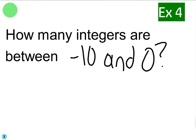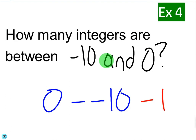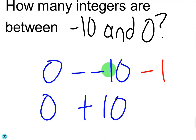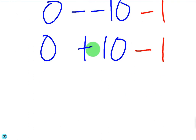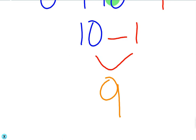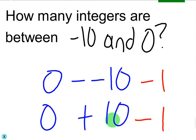How many integers are between negative 10 and 0? You might say 10 in your head, but we need to do the bigger minus the smaller: 0 minus negative 10, which becomes 0 plus 10, and then we subtract 1 because we're finding the number of integers between. So 0 plus 10 is 10, subtract 1, and the final answer is 9. There are 9 integers between 0 and negative 10 — conceptually, those are just negative 1 through negative 9, which makes 9.